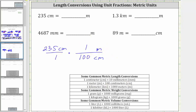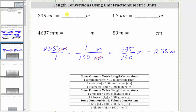Notice in this form, we have centimeters divided by centimeters, and therefore the units of centimeters simplify out, leaving us with meters. So now we multiply: we have 235 times one, which is 235. In the denominator, we have one times 100, and the units are meters. 235 divided by 100 is 2.35, giving us 2.35 meters. So 235 centimeters is equal to 2.35 meters.